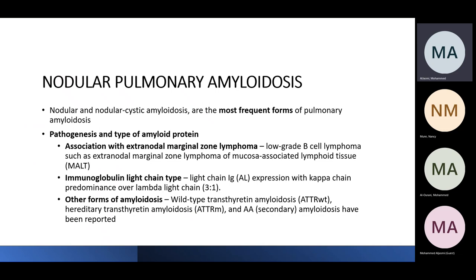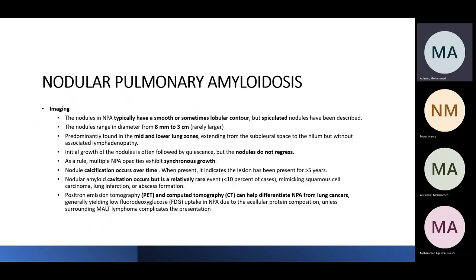The patient was diagnosed with localized AL amyloidosis and placed under surveillance CT scan with no recurrence of disease. Nodular pulmonary amyloidosis is the most frequent form of pulmonary amyloidosis. It is usually due to immunoglobulin light chain AL, typically localized, with Kappa more common than Lambda. Localized nodular disease can also be secondary to lymphoma, such as MALT lymphoma.